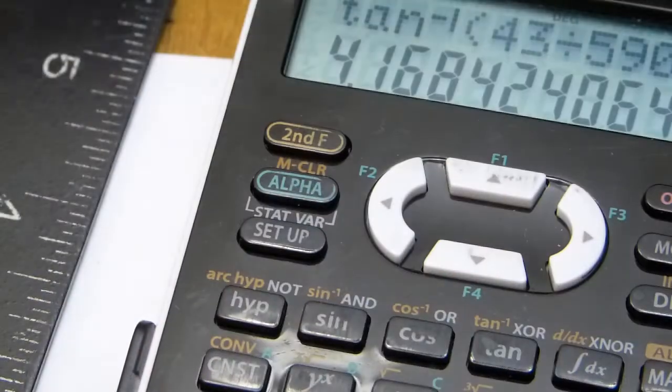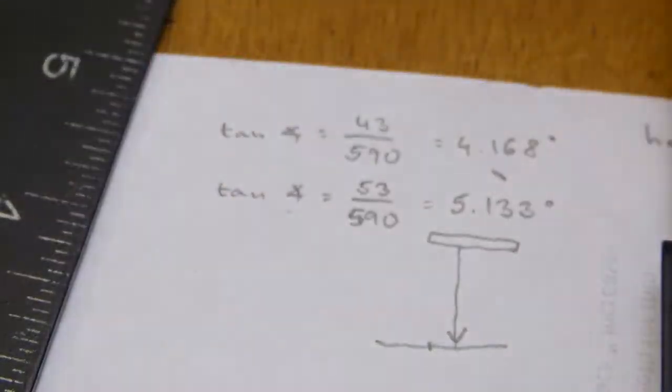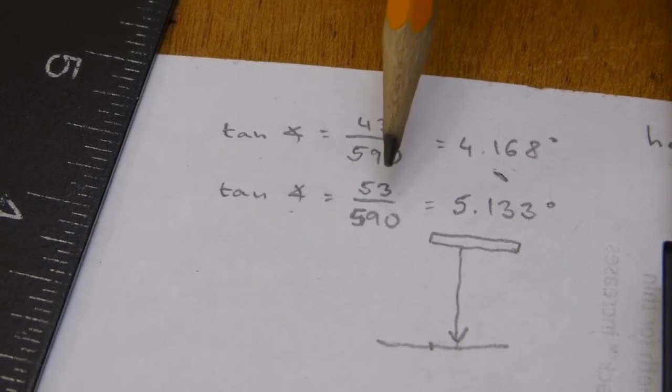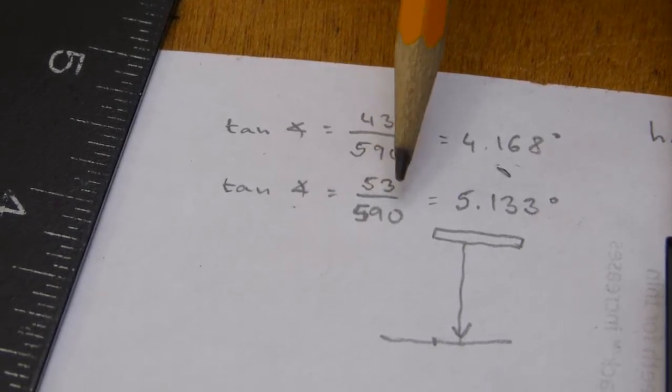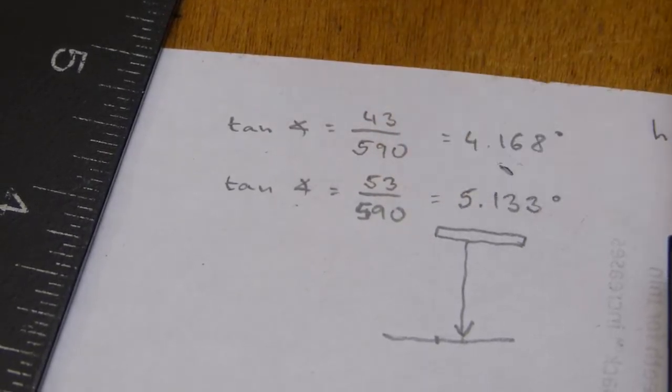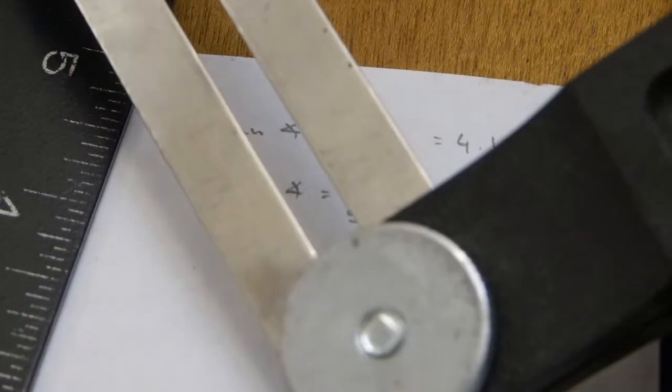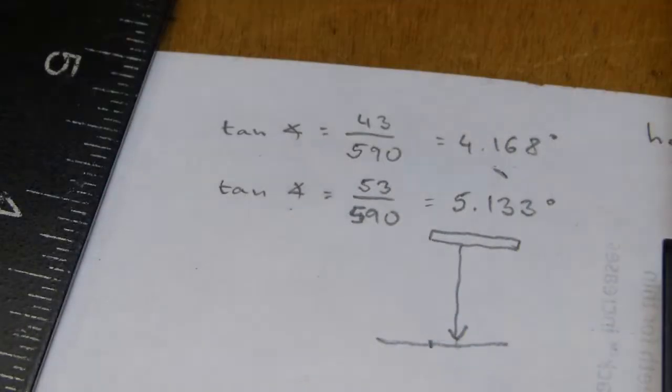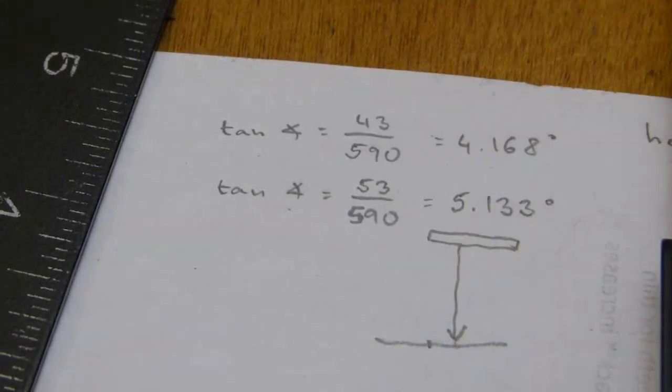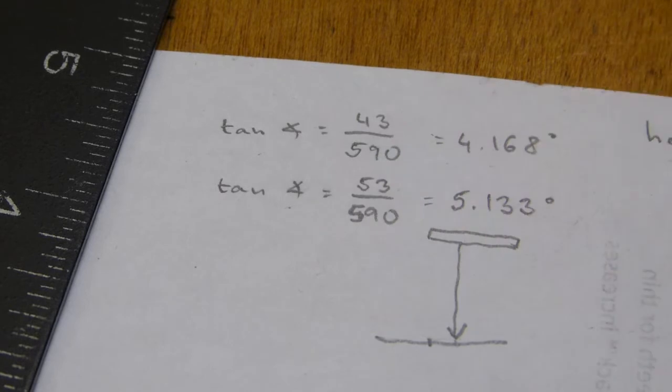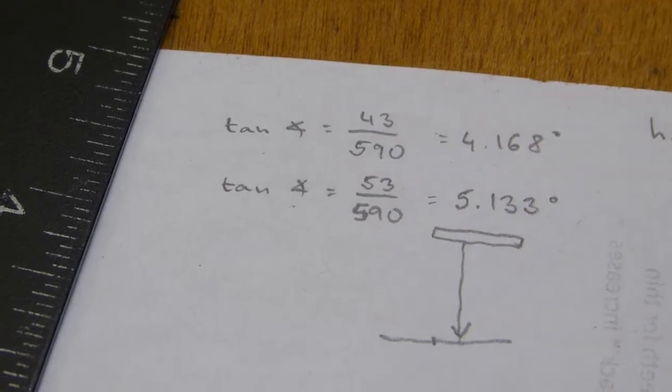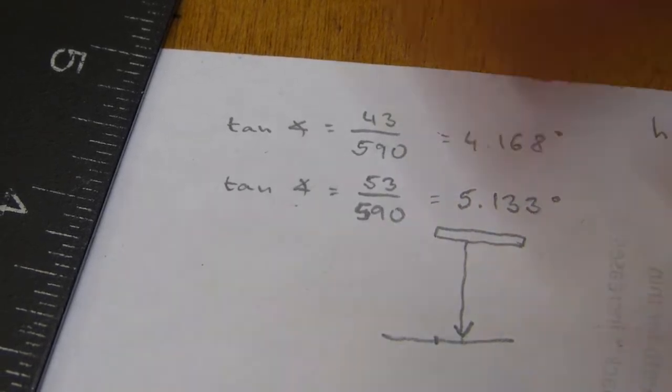The same can be repeated with the 53 millimeter length—same number there—and you're gonna get the five degree angle. That's the other angle where the bevel gauge was fitting a little imperfectly or imprecisely. So those are the two numbers. One of them can be selected on a compound miter saw's tilt.